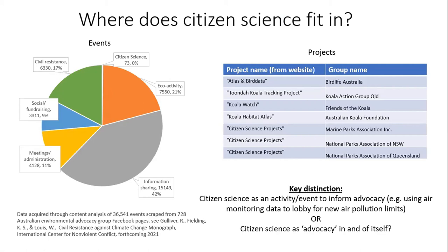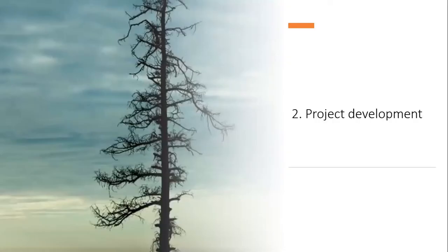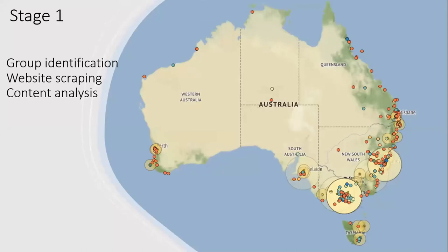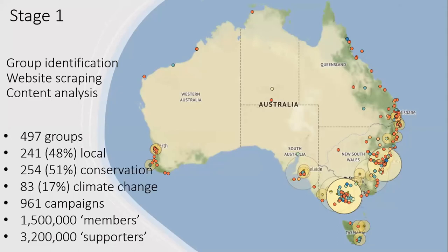I'm now going to give a brief overview of how the project developed. Stage one was data I collected in my PhD. This involved scraping websites for 497 groups involved in environmental advocacy in Australia in 2007. After scraping the website I did a content analysis which found that half the groups were in local areas, half focused on conservation-related issues, 83 groups primarily focused on climate change, and in that sample there were 961 campaigns. There's a lot going on and at this point a seed of an idea was planted.